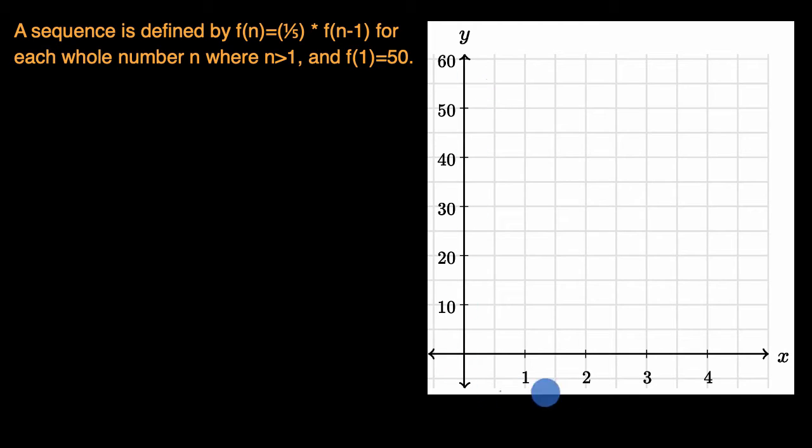Now what I want you to do is pause this video and figure out what the value of this function is for n equals one, two, three, and four. And then we're going to be able to graph this together and think about what that graph looks like and why. All right, now let's do this together. What I like to do is set up a table here with n on the left column and f(n) on the right column.